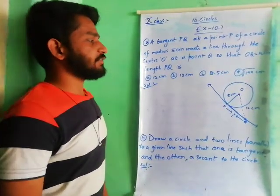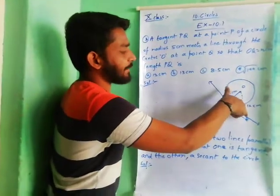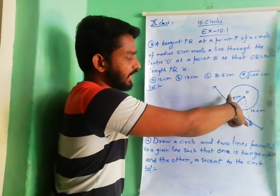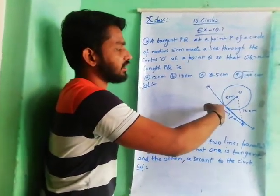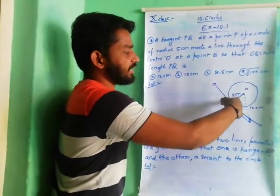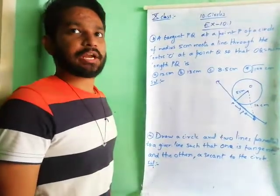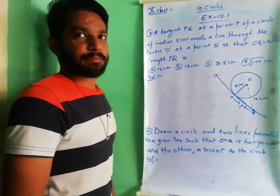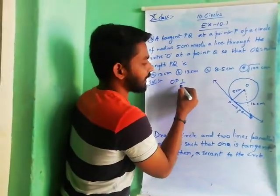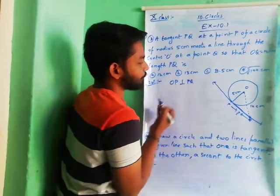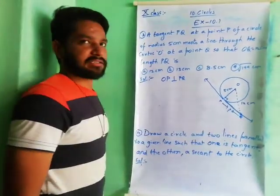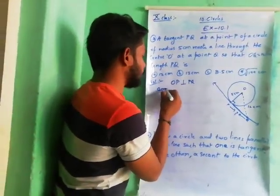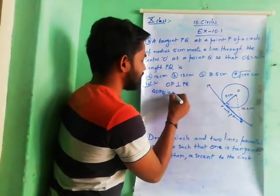By Theorem 10.1, which we already discussed, OP is always perpendicular to the tangent PQ — the tangent at a point of a circle is perpendicular to the radius through the point of contact. So OP is perpendicular to PQ, meaning it makes 90 degrees, and therefore triangle OPQ is a right-angled triangle.